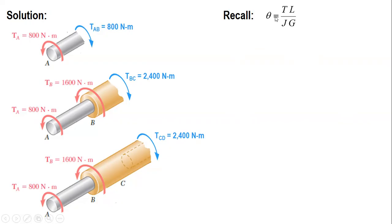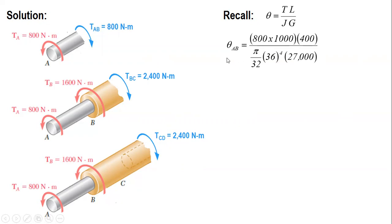Recall the formula for angle of twist is TL over JG. With all given values — length, polar moment of inertia J from the given diameters, and modulus of rigidity G — for unit consistency and to obtain radians, torque must be in newton-millimeters, length in millimeters, J in millimeters to the 4th, and G in megapascals (N/mm²).